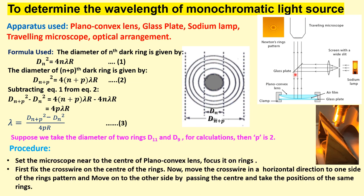The procedure is: first we have to focus the eyepiece on the rings — the central ring is dark in the case of reflected light — and then we move the cross wire. First we measure the left side: suppose the 13th, 11th, 9th, 7th rings and so on on the left-hand side, and then repeat this procedure on the right-hand side. Then we take the difference of right and left to find the diameter of the different rings.